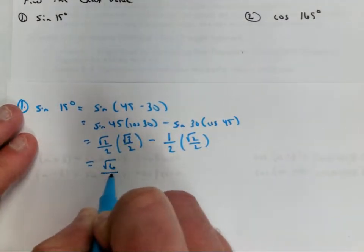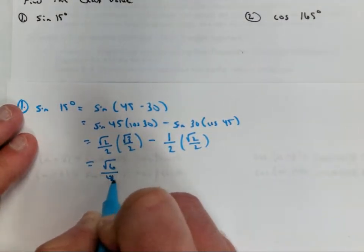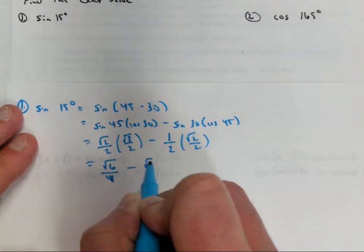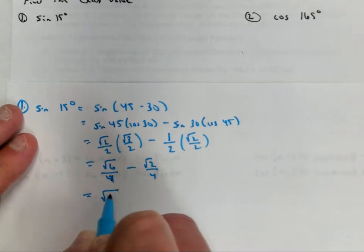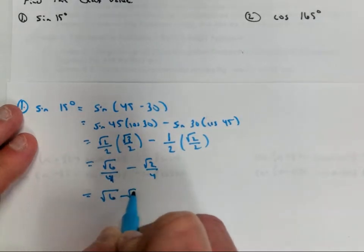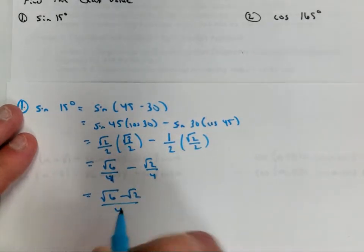So I get square root of 6 over 4 minus square root of 2 over 4. My answer is square root of 6 minus square root of 2, all over 4.